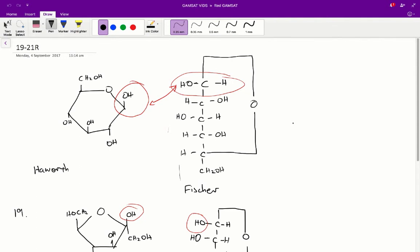If you didn't know already, Haworth and Fischer structures are the same molecule being represented, it's just in different forms. So Haworth is in a ring and Fischer is in a sort of line structure.